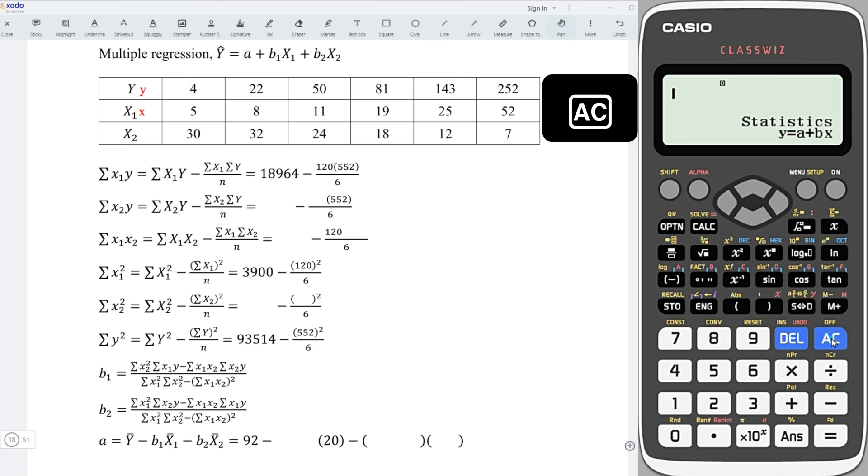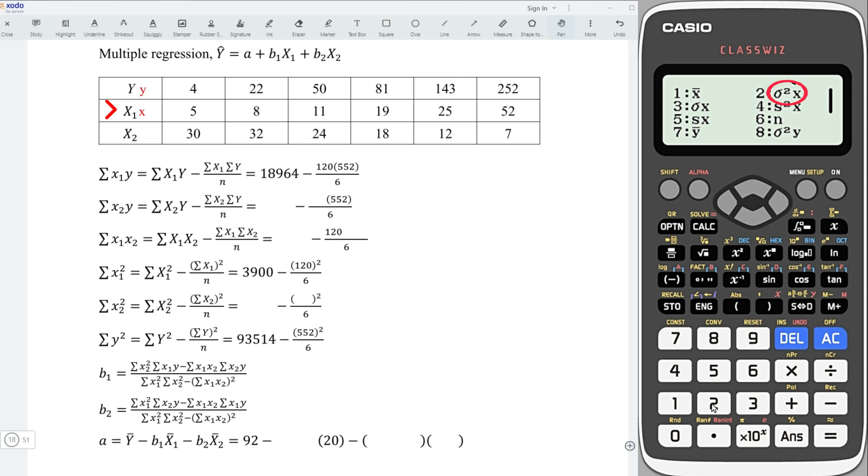Next, press on AC option, down, and choose 2 for variable. We need the variance of the variable x. Choose 2, and we have 6 pairs, so multiply 6. Press on equal, and we obtain the sum of square for the variable x.